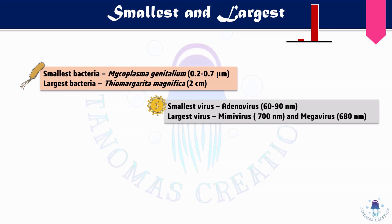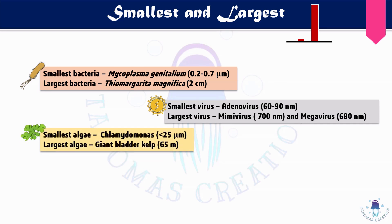The smallest virus is adenovirus, with a size of 60 to 90 nanometers. The largest viruses are mimivirus, approximately 700 nanometers, and megavirus at 680 nanometers. For algae, the smallest is Chlamydomonas, with a size of less than 25 micrometers, and the largest algae is giant bladder kelp, with a size of 65 meters.